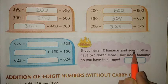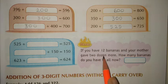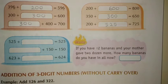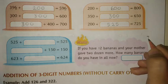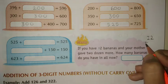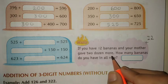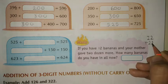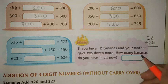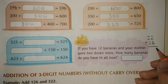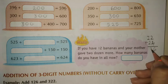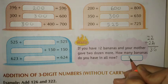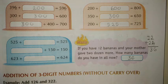Word problem: If you have 12 bananas and your mother gave you 2 dozen more, how many bananas do you have in all now? आपकी पास 12 बनाना हैं और आपकी mother ने आपको 2 dozen बनाना और दिये. 2 dozen यानि 24, क्योंकि 1 dozen equal to 12. So total: 12 plus 24. 2 plus 4 equals 6, and 1 plus 2 equals 3. You have 36 bananas altogether.